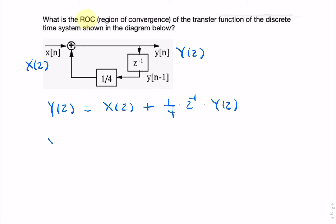So if I move y of z terms all to one side, then I'll have 1 minus 1 over 4 z to the minus 1. And now I can write the transfer function simply as 1 over 1 minus 1 over 4 z to the minus 1. So that's my transfer function.